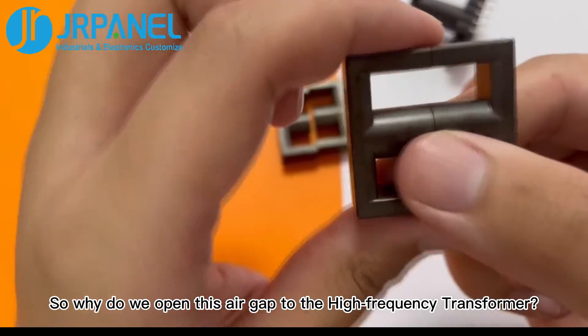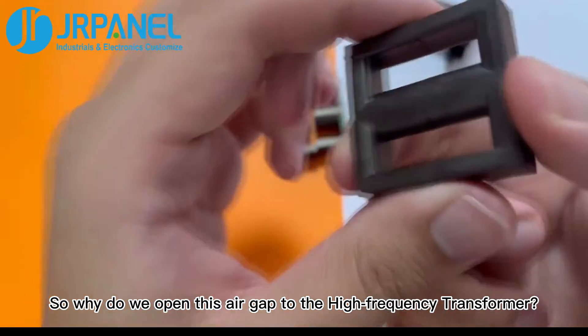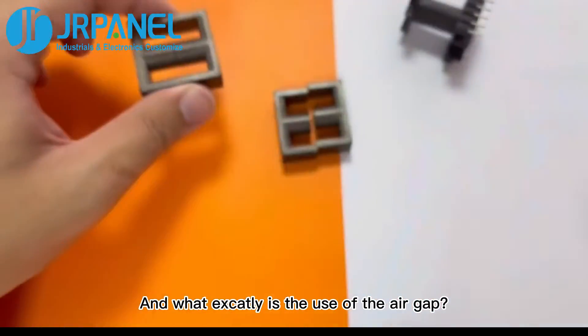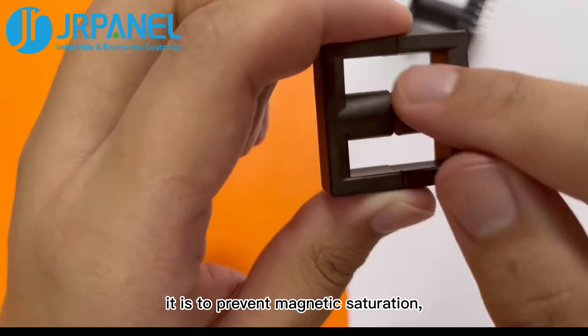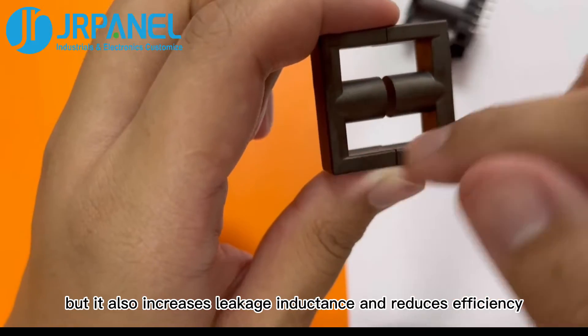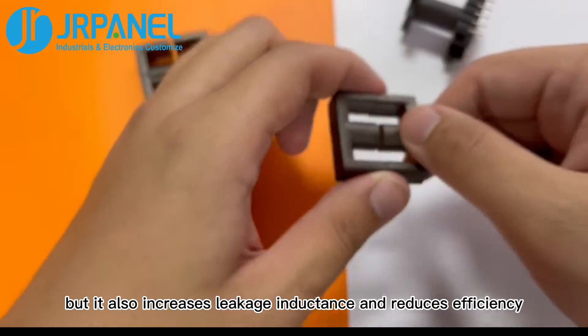So why do we open this air gap to the high-frequency transformer? And what exactly is the use of the air gap? In simple terms, it is to prevent magnetic saturation. But it also increases leakage inductance and reduces efficiency.